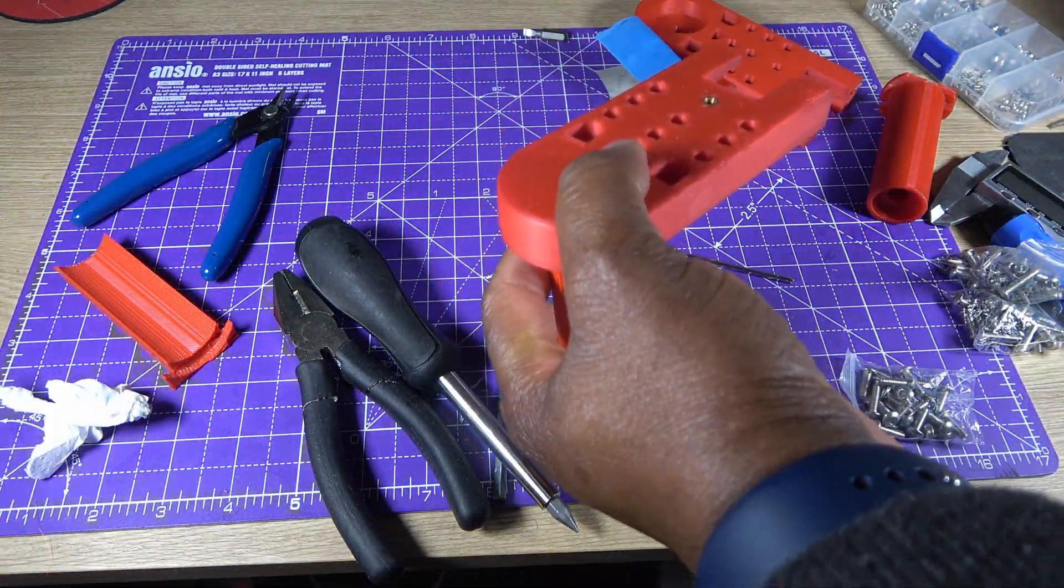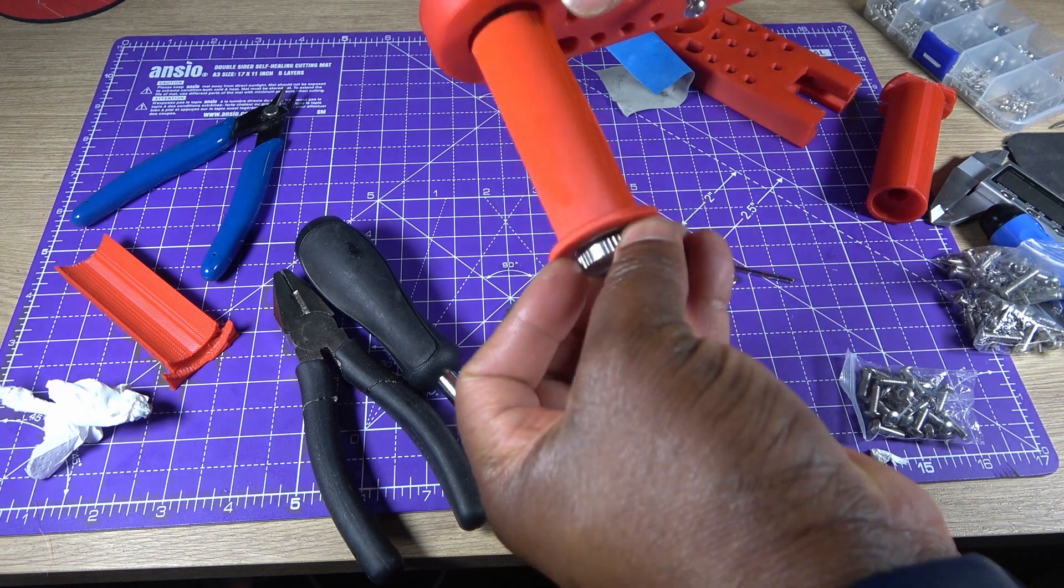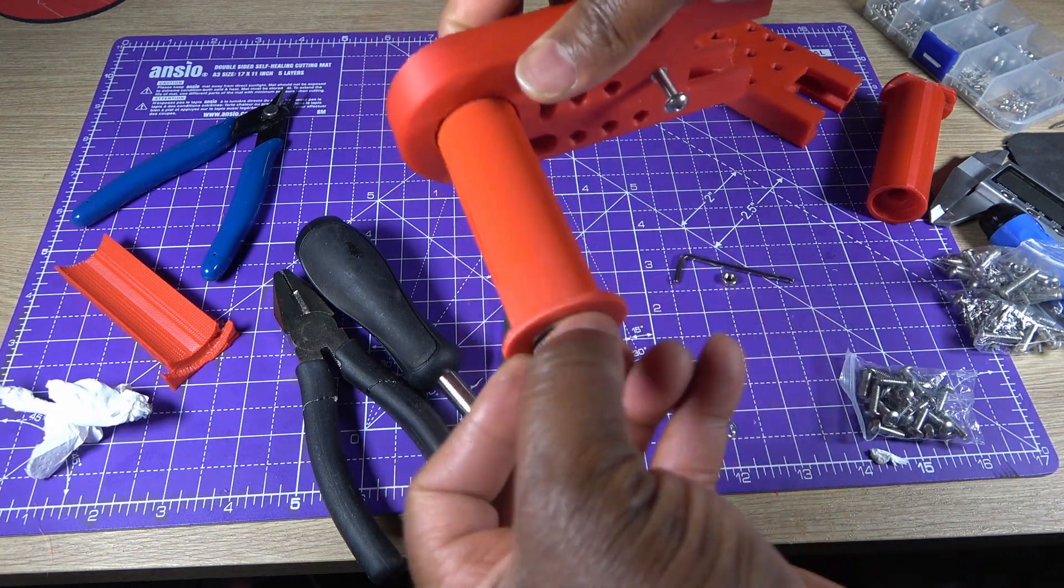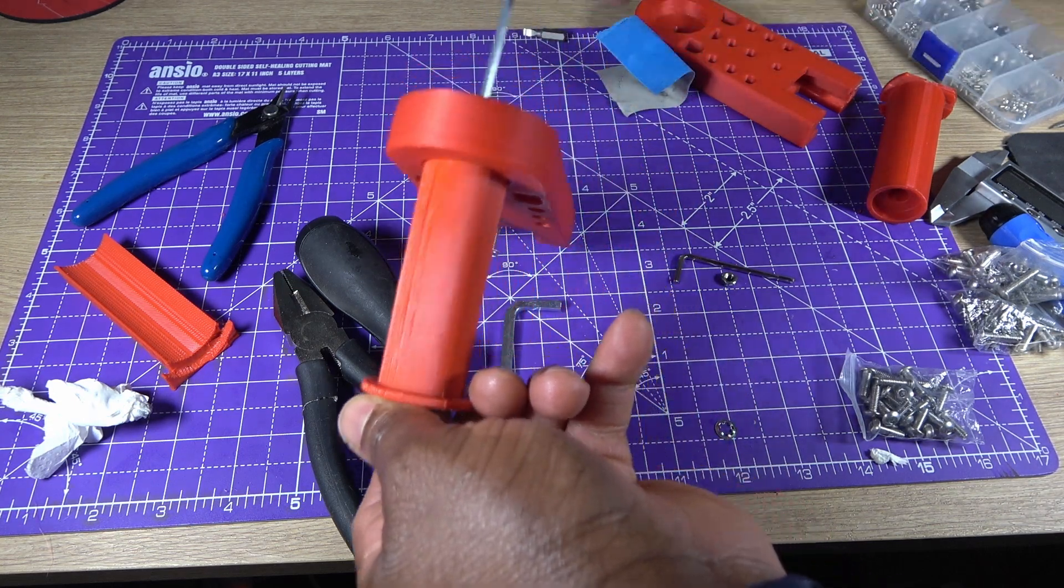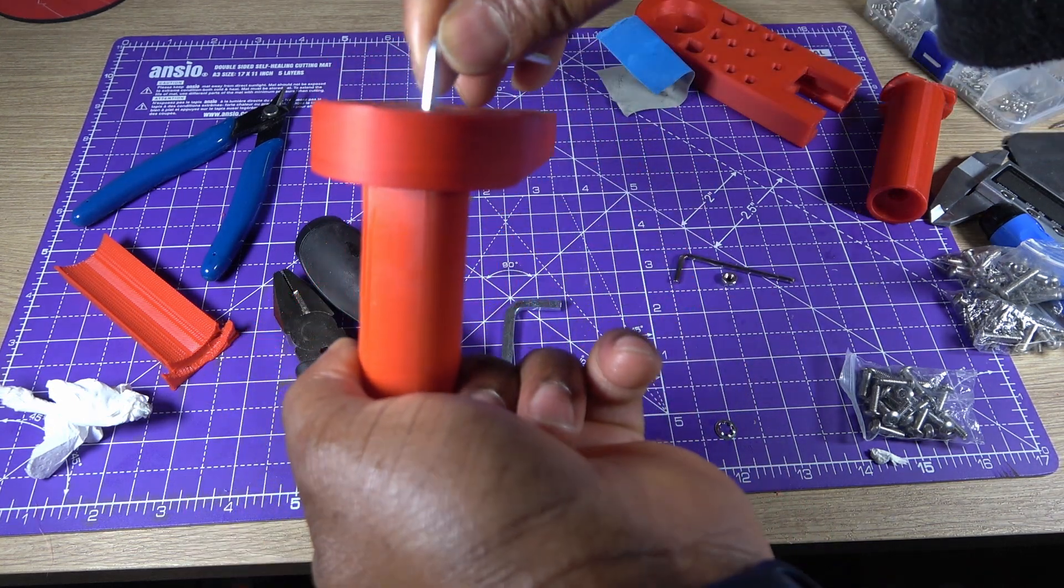The last bit is screwing the shaft in. It should be screwed in tight. This will not interfere with the bearing because clearance is built into the design. But be careful, remember it is still 3D printed plastic.